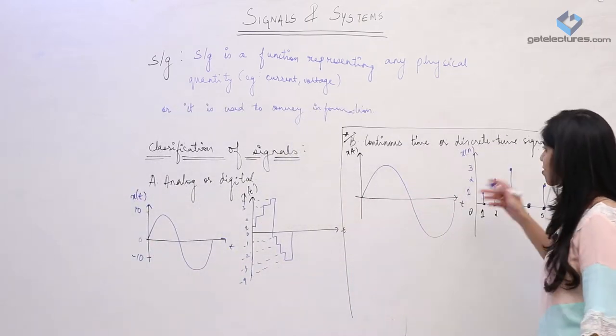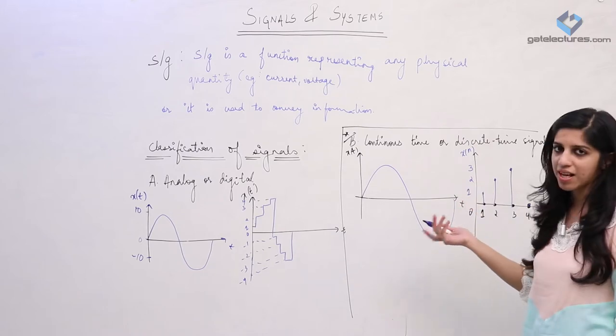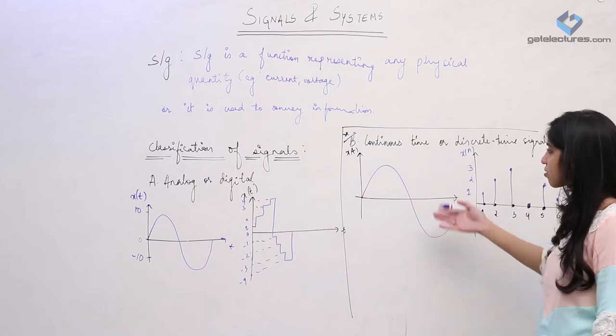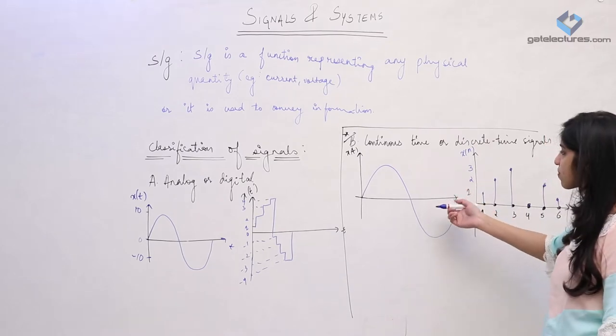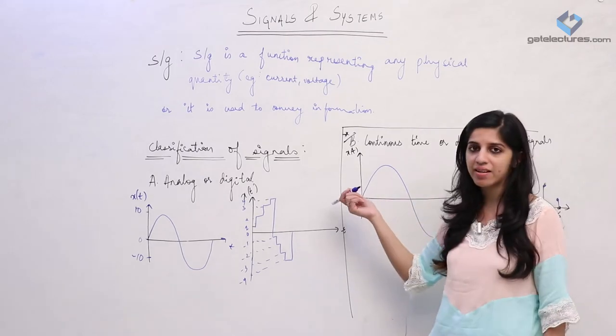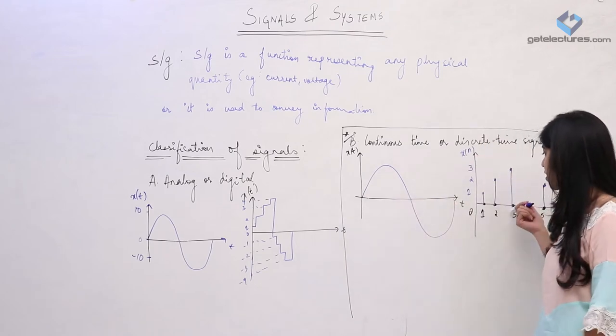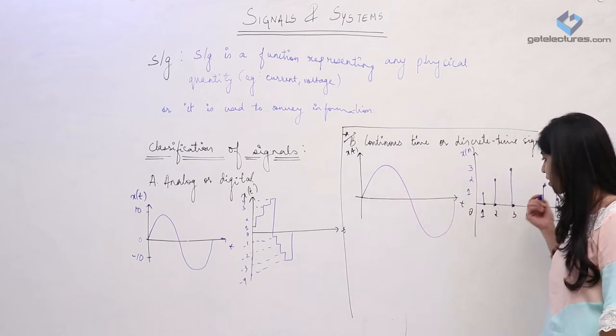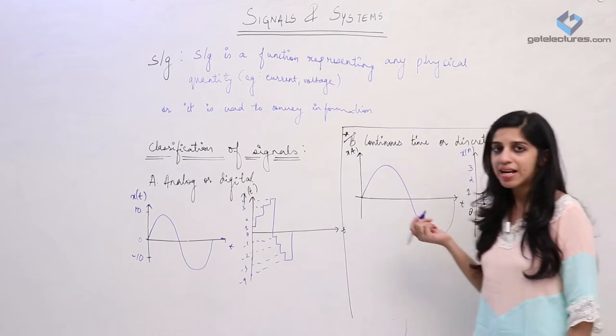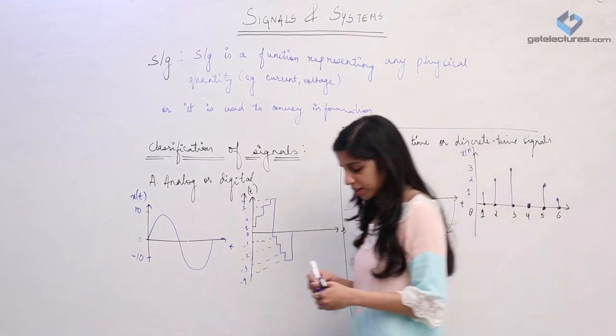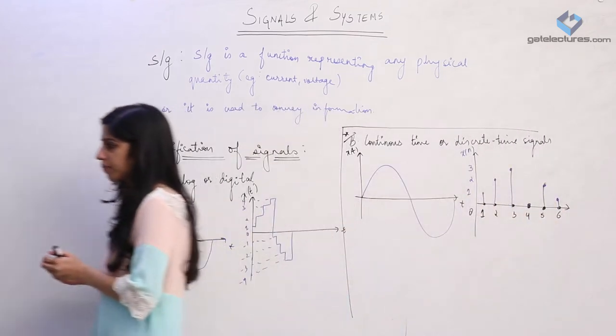For now, just understand the classification of signals. This is a continuous time signal where time can take any real value, and this is a discrete time signal where time can only take integral values.